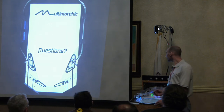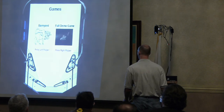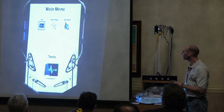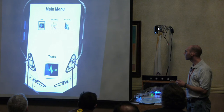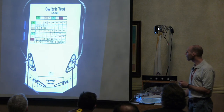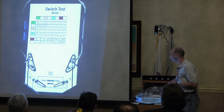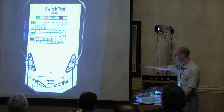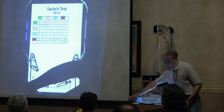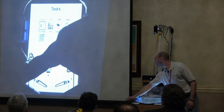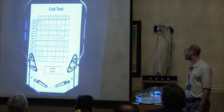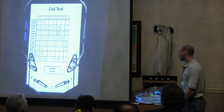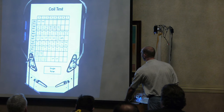Let me jump into the service mode real quick. There are three things right now: Test, Main Settings, and Main Audits. The tests include switches — there's a switch grid; as I run my finger through the optos up top you can see it respond. The buttons work just like any other switch test. Coils — I can fire my coils, just like any other test mode.